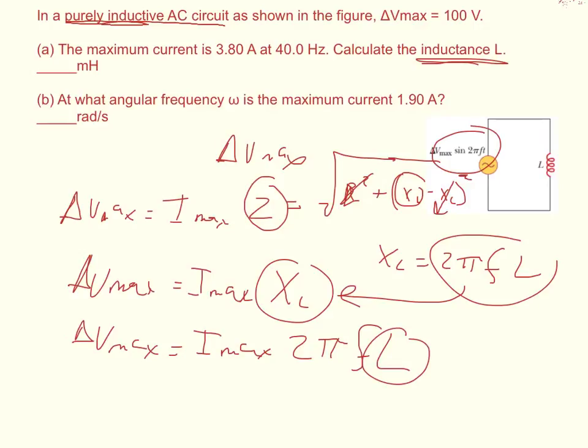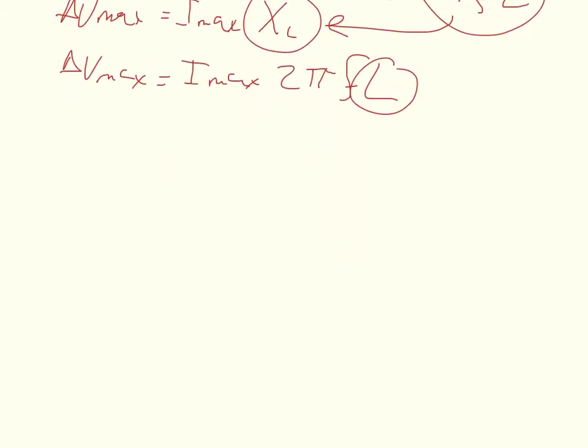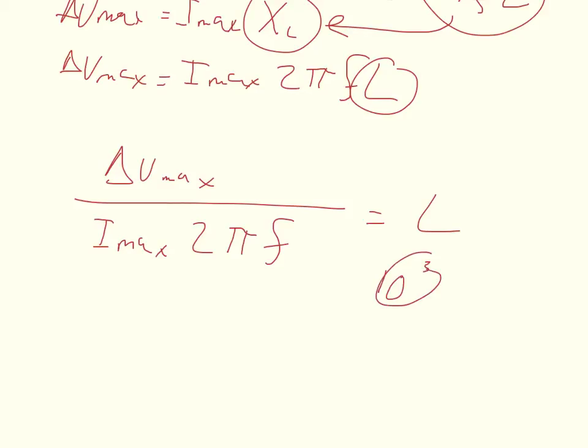And so we could just solve for the inductance at this point. So we get that delta V max divided by I max times 2 times pi times the frequency is equal to the inductance. Now work all this out, plug in your numbers, but remember one thing, it wants the units in millihenries. So at the very end times your answer by 10 to the third and you should get millihenries.